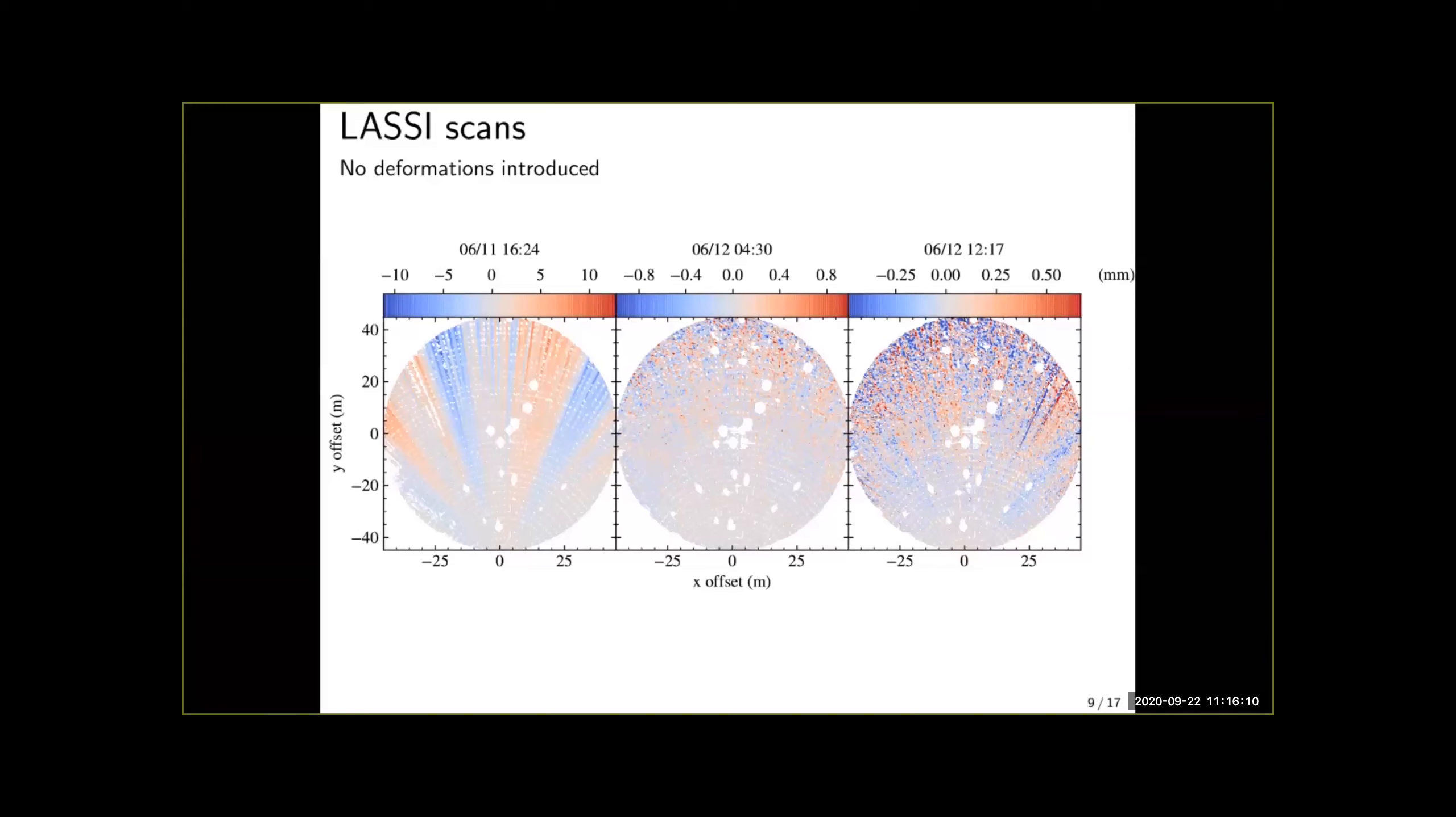On the left what we have is a scan where we see clear radial artifacts. We know that the dish of the GBT never deformed to this kind of amplitudes.